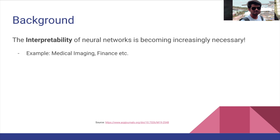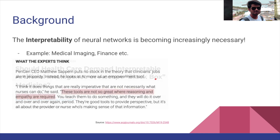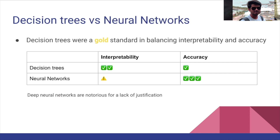Let's start with some background. The interpretability of neural networks is becoming increasingly necessary as deep learning is being adopted in settings where accurate and justifiable predictions are required. These applications range from finance to medical imaging. Defining explainability or interpretability for computer vision is very challenging, so let's see how decision trees fare with neural networks.